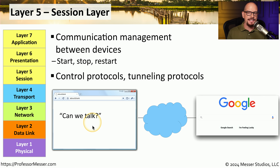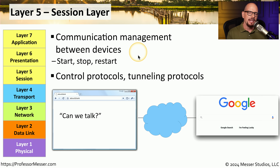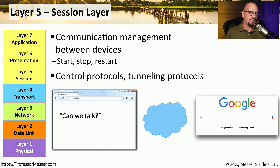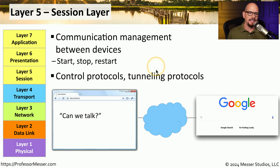Before sending information across the network, we may need to create a session so a device is able to receive data. Layer 5 is the session layer, providing communication management between point A and point B. Anything relating to initiating, stopping, or restarting a session is associated with layer 5. If an application is using a control protocol or tunneling information within existing data, that's OSI layer 5.